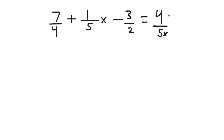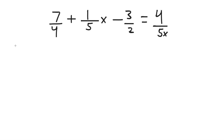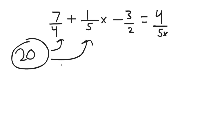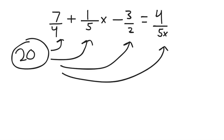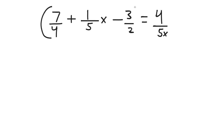Let's do another example. As you can see, we have fractions. When we have fractions, the best thing to do is find the LCD — the least common denominator. We have denominators of 4, 5, 2, and 5. We need to find the lowest number they all multiply into: 4 times 5 is 20, 5 times 4 is 20, and 2 times 10 is 20. So the LCD is 20, and we multiply both sides by 20.